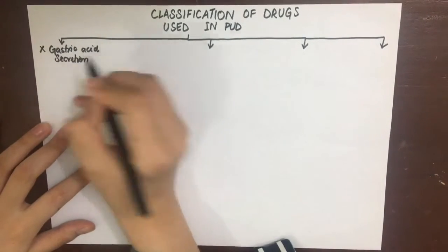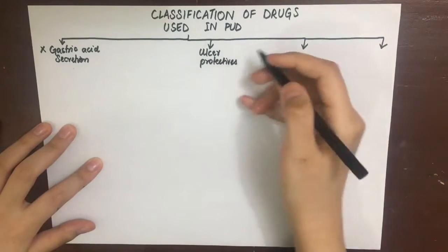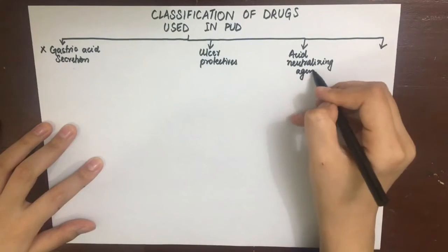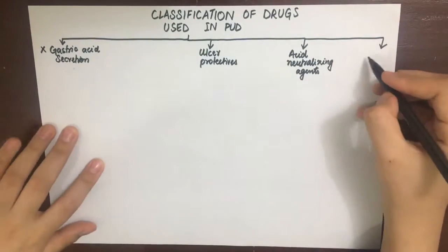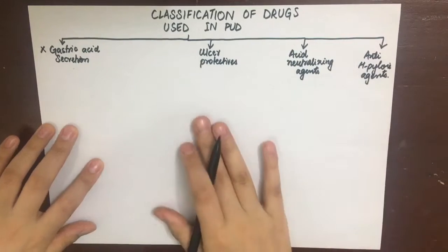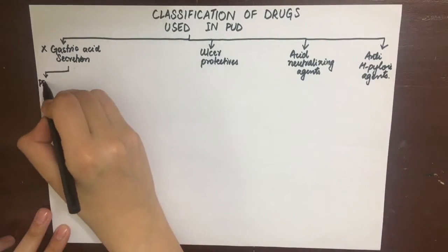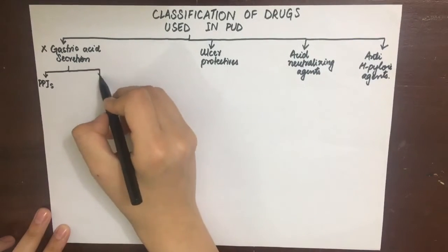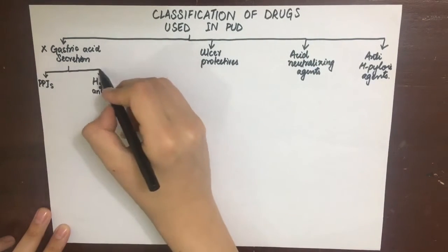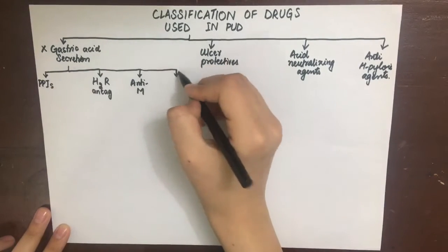Coming to the classification of drugs used in peptic ulcer disease: we have drugs which inhibit gastric acid secretion, drugs which are ulcer protectives, acid neutralizing agents, and anti-H. pylori agents. The four classes that inhibit gastric acid secretion are proton pump inhibitors, H2 receptor antagonists, anti-muscarinic agents specifically M1, and prostaglandin analogues. The acid neutralizing agents can be non-systemic as well as systemic.